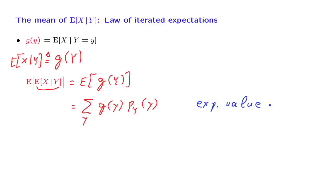And the next step is to substitute the particular form for g of Y that we have. g of Y was defined in this manner, so we're dealing with the sum over all little y's of the expected value of X, given that Y takes the value little y, weighted by the PMF of little y.